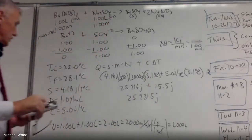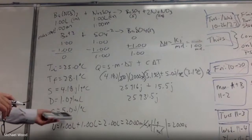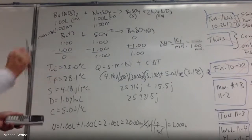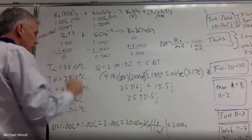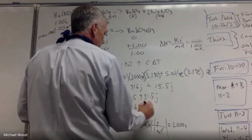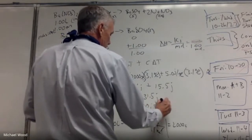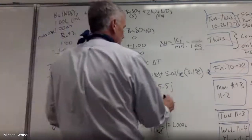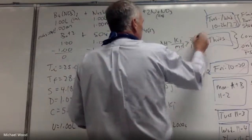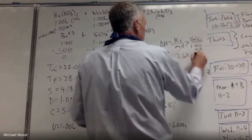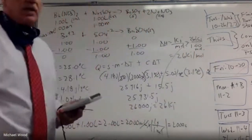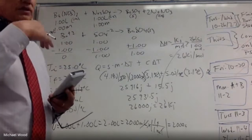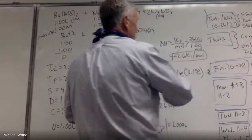Now I'm going to look at sig figs. This value is a constant and shouldn't determine sig figs. When I subtract to get ΔT, remember you round based on decimal place. So I'm going to make this 26,000 joules, which is 26 kilojoules. Coming back, I have 26 kilojoules. My ΔH value is 26 kilojoules per mole. And always the last step — the sign. If the temperature increases like it did here, it's negative. So this would be −26 kilojoules per mole.